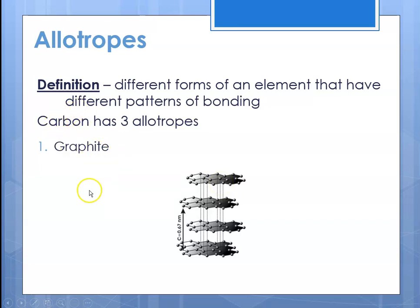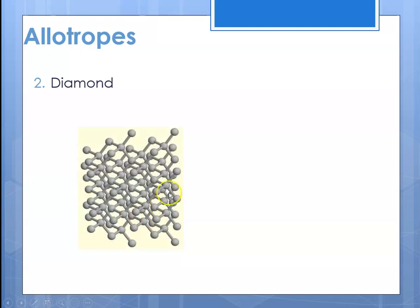The second allotrope of carbon that we talk about is my personal favorite, and that is the diamond. And so the diamond is also made up of six-membered rings, all containing carbon, but they are arranged differently, and they are interconnected in this way.